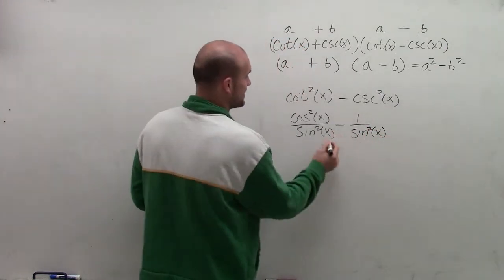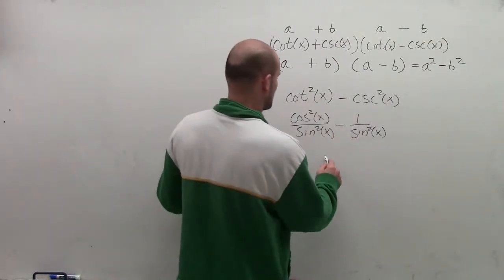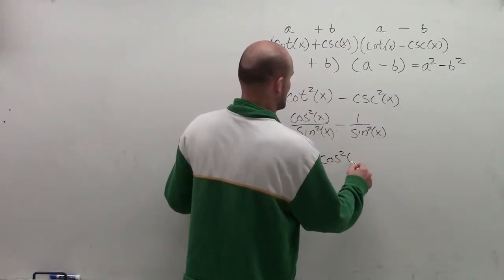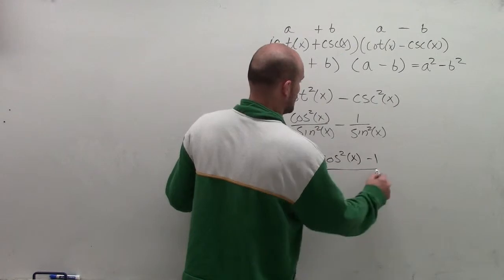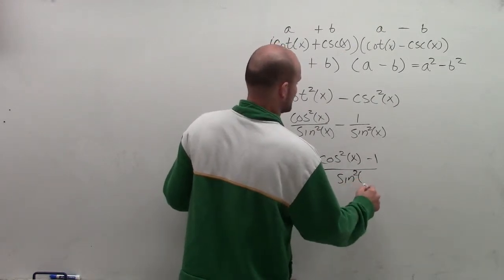So therefore, since they have the same denominator, I can actually rewrite these to be cosine squared of x minus 1 all over sine squared of x.